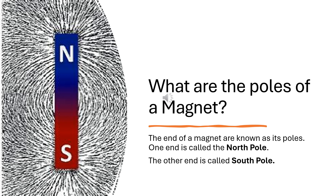What are the poles of a magnet? The ends of a magnet are known as its poles. One end is called the north pole and the other end is called the south pole.